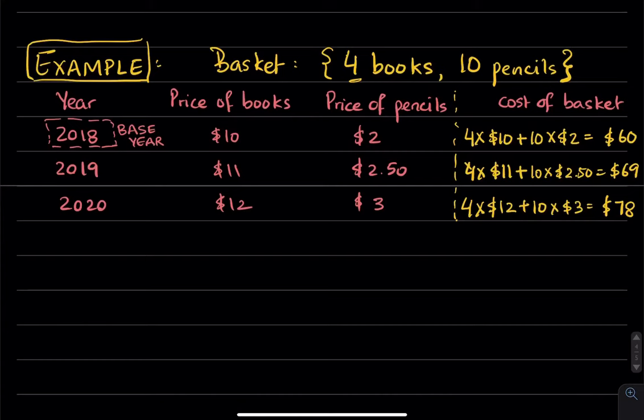So, this was our third step. This was step number one. This was step number two. And third was cost of the basket. The fourth step is going to be computing the CPI in each year.